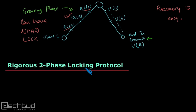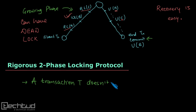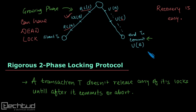In rigorous 2PL we have an extra rule: whereas in strict 2PL we were allowing read locks — shared locks — to be unlocked during the shrinking phase, in rigorous 2PL we do not allow even those unlockings. All unlockings, both shared and exclusive, are only allowed after commit.